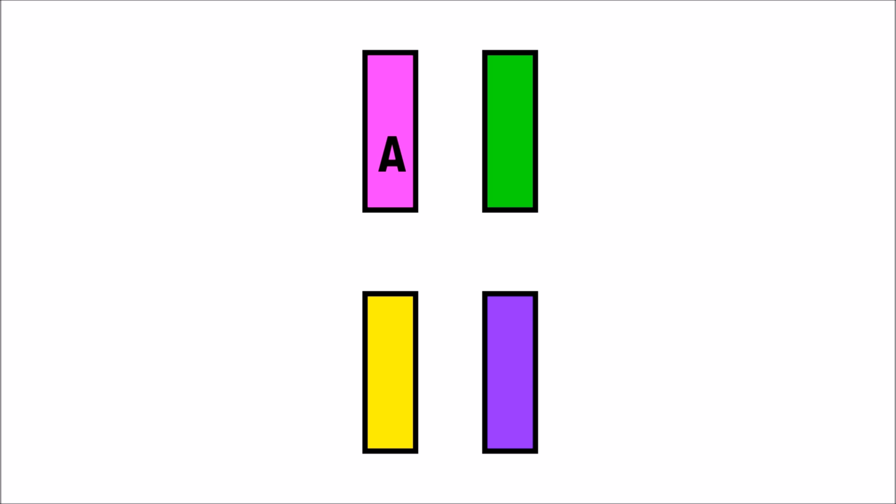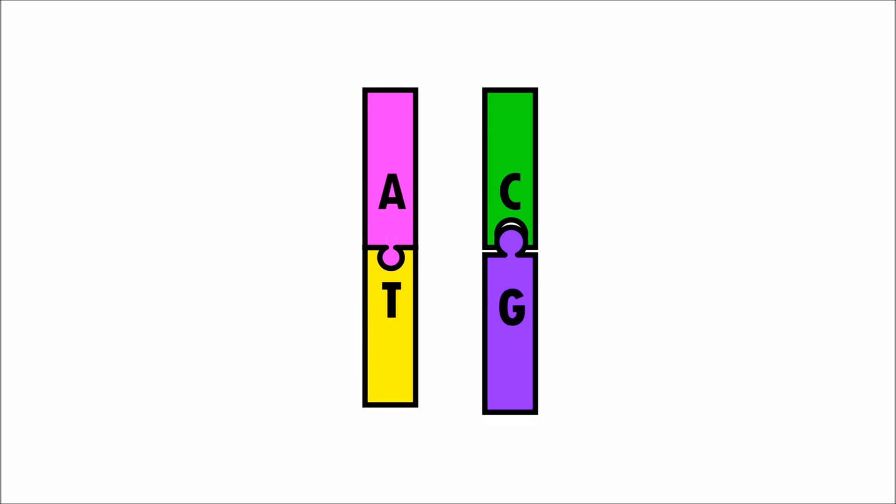There are four different types of nucleotides, which we will label as A, T, C, and G. Nucleotides are paired up like puzzles, where A and T fit together, and C and G fit together.